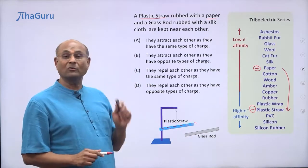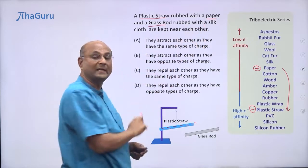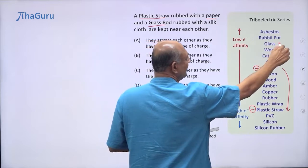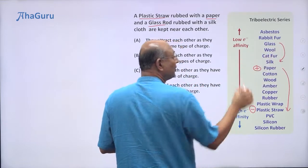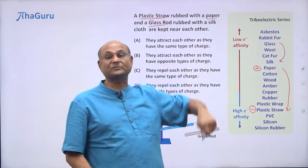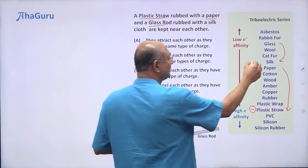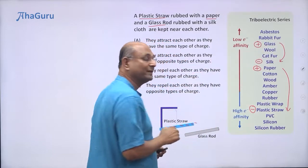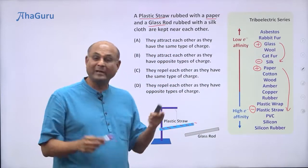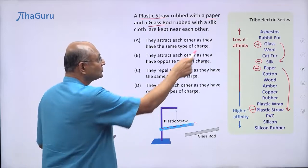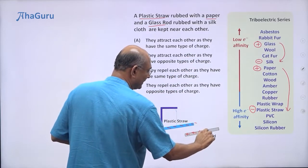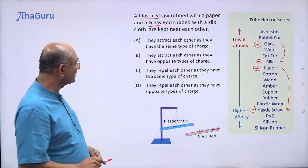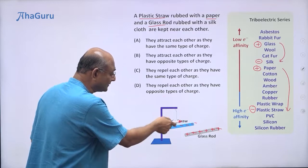Now let's look at the glass rod rubbed with silk. Glass is higher on the triboelectric series and silk is below it, so silk will take electrons from the glass. Silk becomes negatively charged and glass becomes positively charged. We only care about the glass rod, which is going to be positively charged.